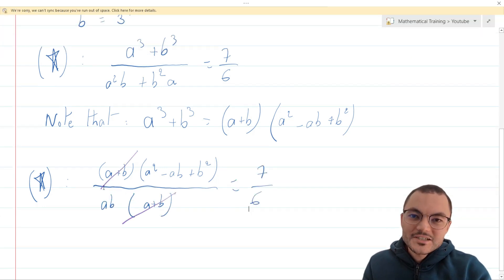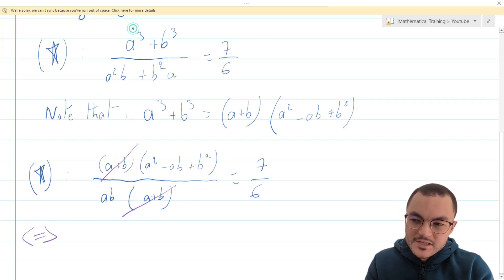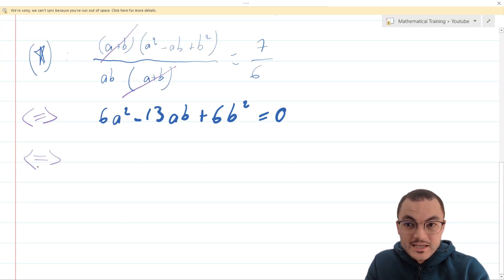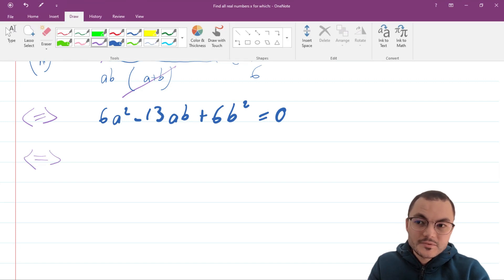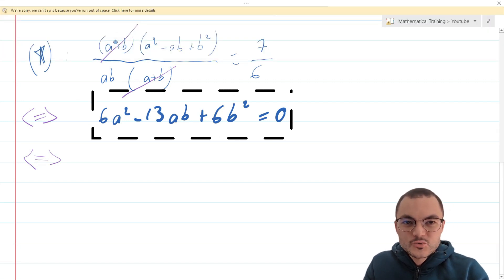Cross multiplication results in the equation 6 times a squared minus 13 times a times b plus 6 times b squared equals 0.